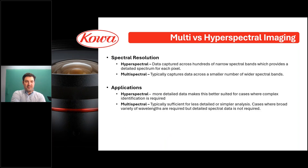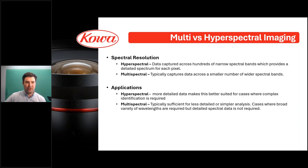Some ways that spectral resolution differs between hyperspectral and multispectral: hyperspectral data is typically captured across hundreds of narrow spectral bands, which can provide a detailed spectrum for each pixel, and you'll typically have a continuous spectrum. Multispectral again captures data across a smaller number of wider spectral bands, and these may be contiguous but are typically spaced out.